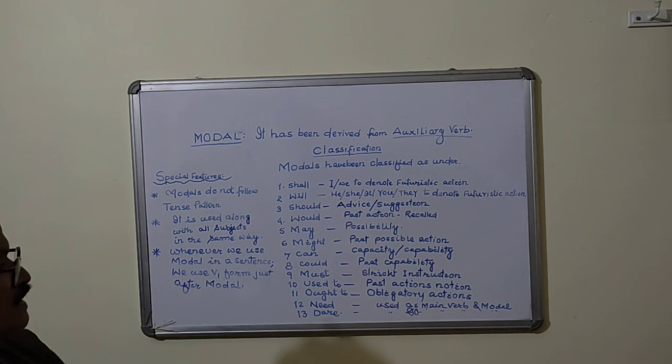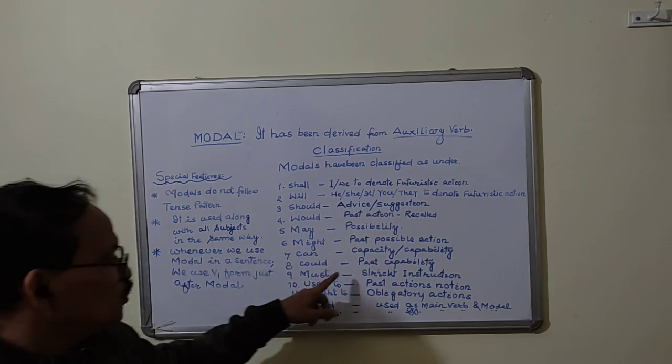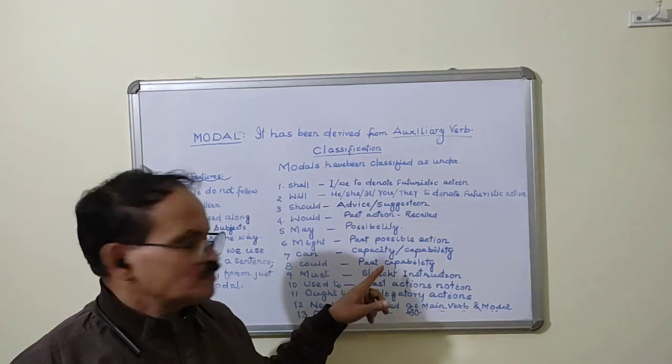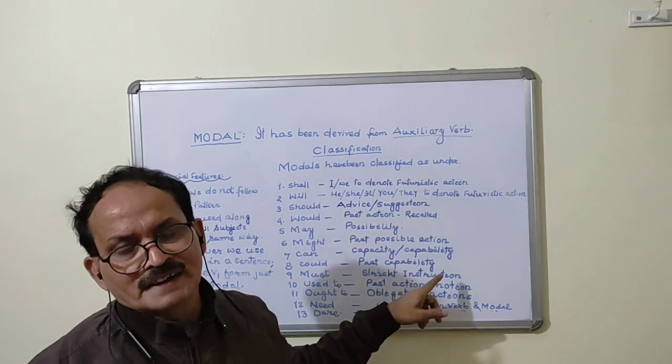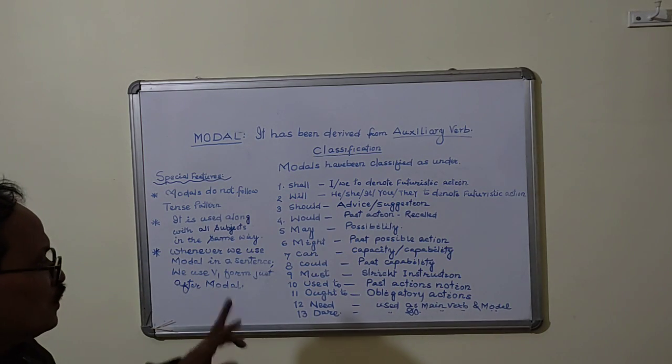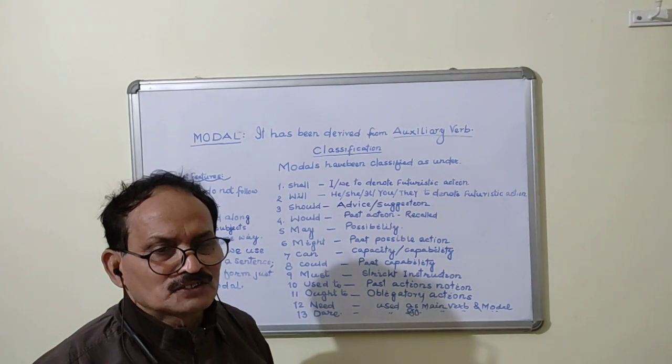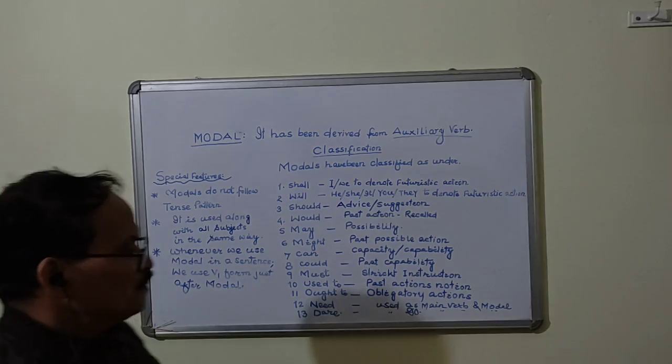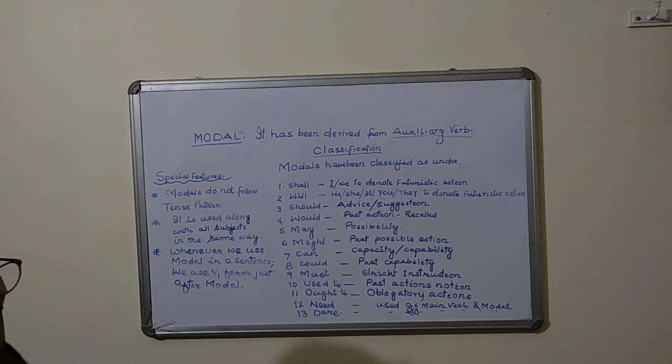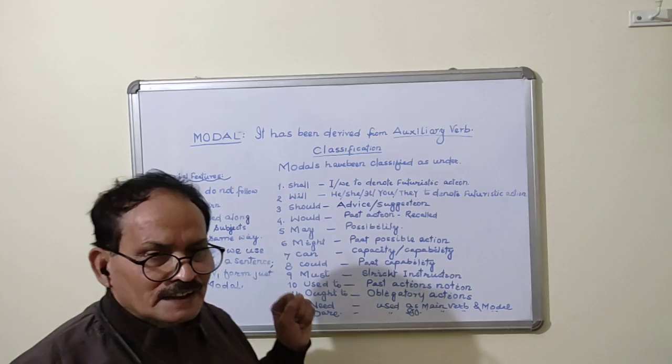Could is the past form of can which is used to denote past capability of an individual. For example, if I say he could speak but at present he is not in a position to speak. Means the person is suffering from the disability of hearing.